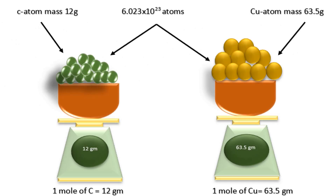Let's understand this mole concept with the help of a figure. Here on the left side we can see 1 mole of carbon which is equal to 12 grams, which is the molecular mass of the carbon atom. So 1 mole of carbon is equal to 6.022 × 10²³ atoms, which is Avogadro's number. On the other hand, 1 mole of copper is available and its weight is 63.5 grams. Carbon is also 1 mole and their weights are different — it is 12 grams and it is 63.5 grams. But the number of atoms in 1 mole of each — carbon and copper — is equal to 6.022 × 10²³ atoms, which is Avogadro's number.